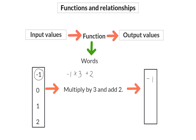Next I will take the input value zero, multiply by three to get zero, and then add two to find my output value of two. Then I will take one, multiply by three to get three, and when I add two I will end with five. Lastly, taking two and multiplying by three gives me six, and when I add two more I will get an output value of eight.